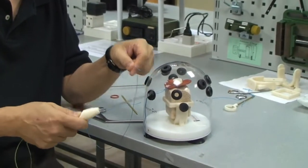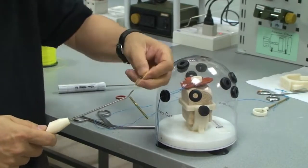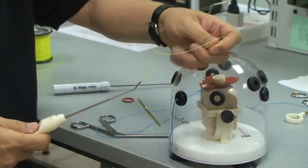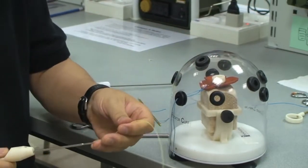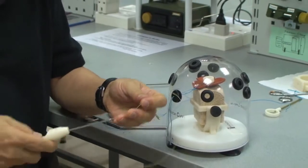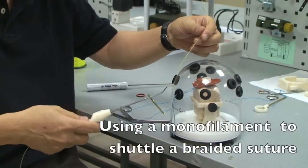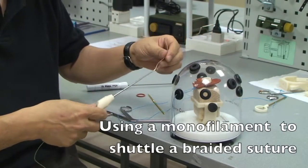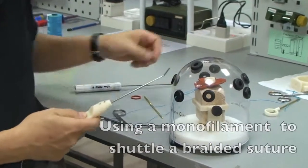We can also take a monofilament, a single limb of the monofilament. I'm just going to pull this out right now. One single limb. And then pass this through the rotator cuff and use this as a suture shuttle to shuttle the braided suture across the rotator cuff. So what you do is that you retract this all the way into the needle.